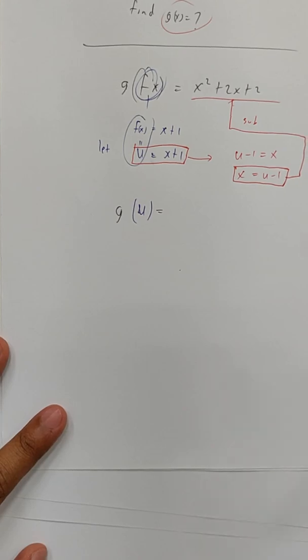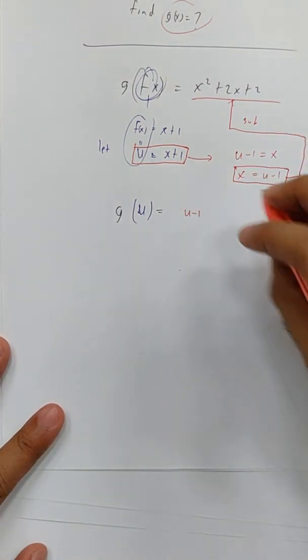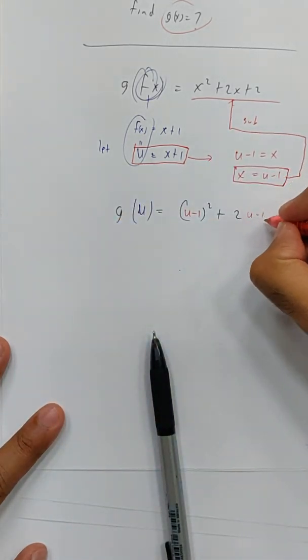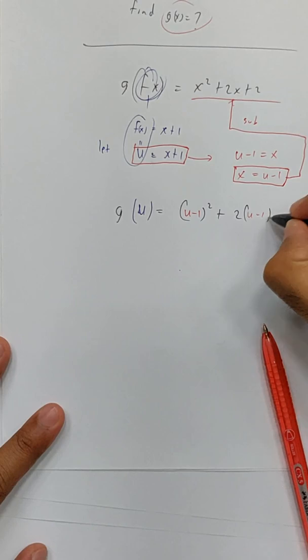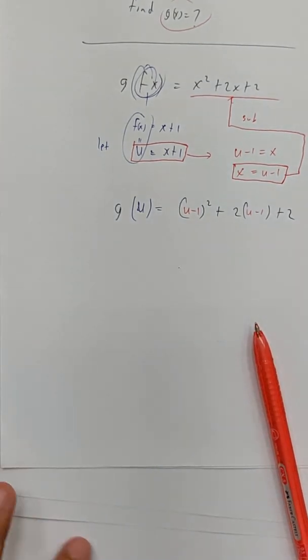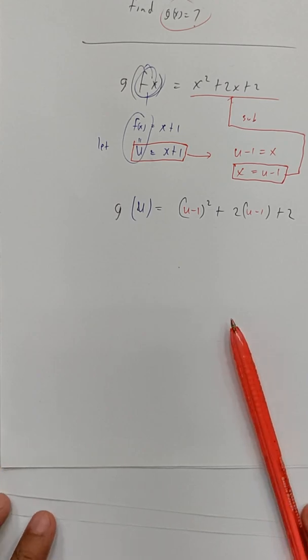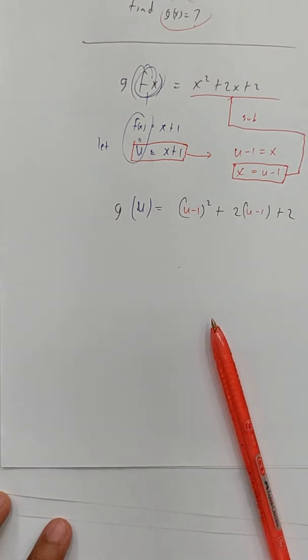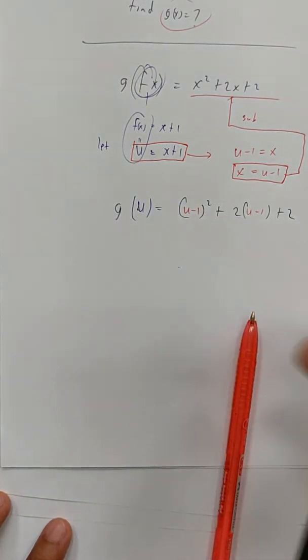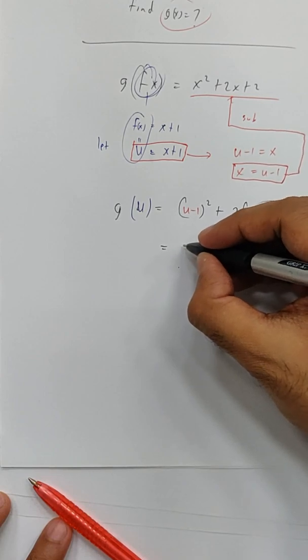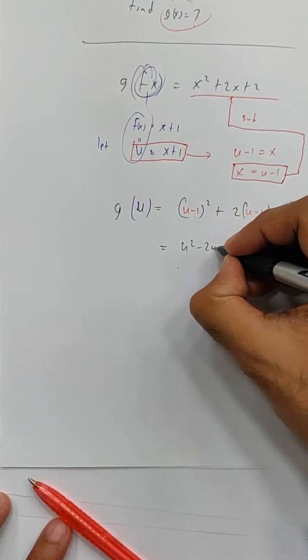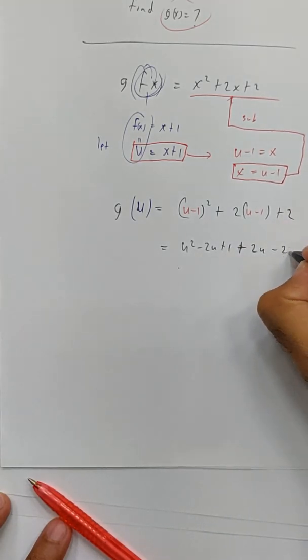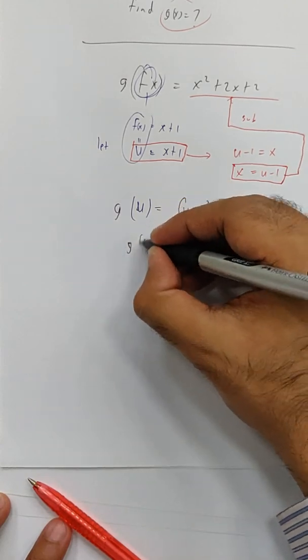So you get yourself (U minus 1) squared plus 2(U minus 1) plus 2. This one is a bit tired. You need to find the inverse and go there the other way around. So you got yourself, you need to expand each one of them. U squared minus 2U plus 1 plus 2U minus 2 plus 2.